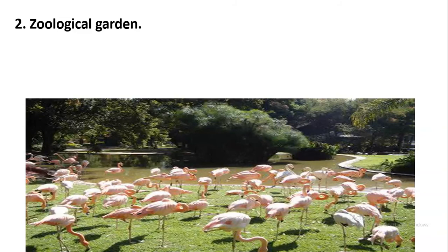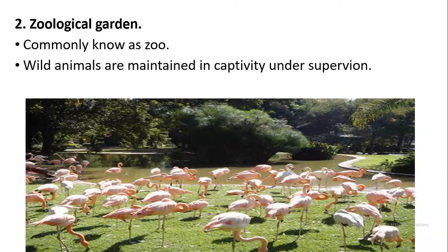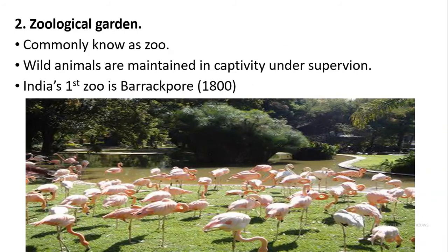Next comes zoological gardens, also called zoos, where wild animals are kept under captivity and supervision. The first zoo built in India is at Barakpur.